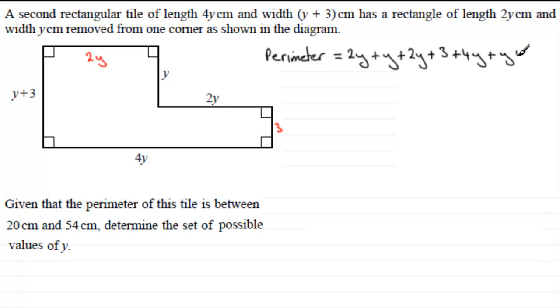So if we just simplify this, what we've got is a total of 10y. And then if we add up the constants, we've got 3 plus 3 there which is 6, so perimeter is 10y plus 6.